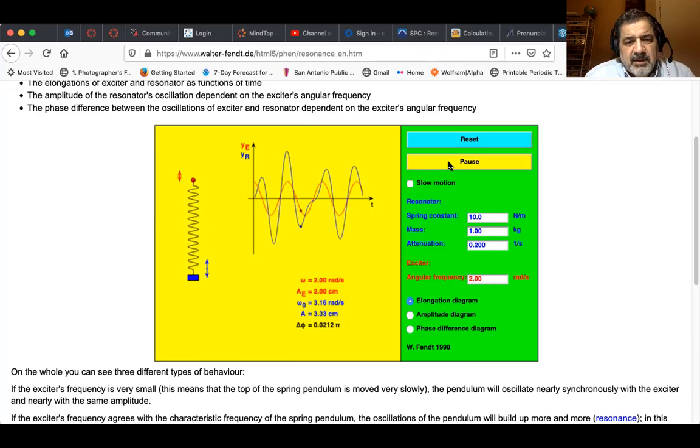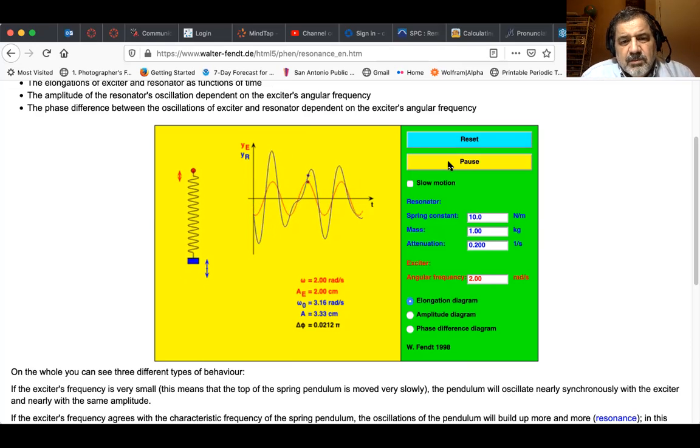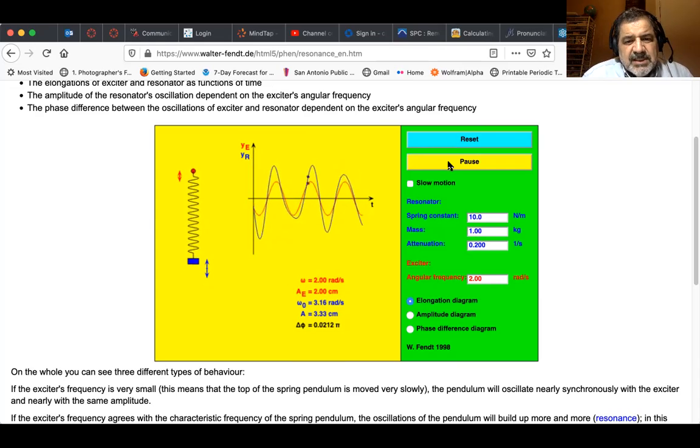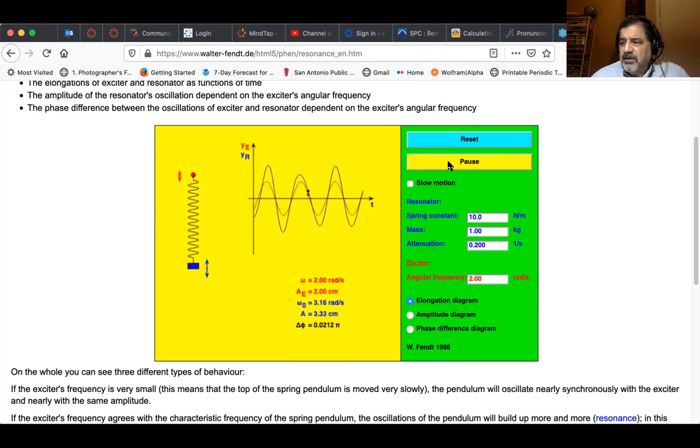And you can see how the amplitude, which is the blue one, it's kind of all over the place because it's not at the resonance. It's not exciting it at the resonant frequency. Well, let's get it at the resonant frequency and the resonant frequency omega zero is given by the square root of K M. So we're going to, let's reset this.